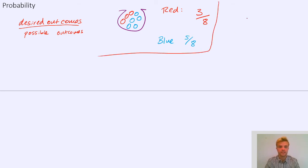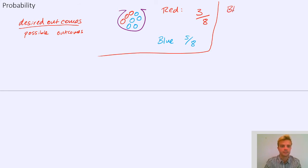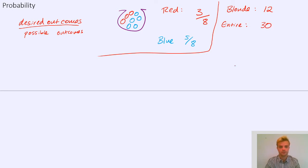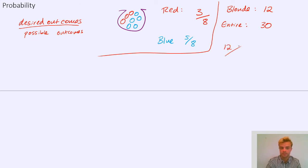Let's say it's not balls in a bag — let's say it's students in a group of people. There are, let's say, 12 blonde students and the entire class is going to be 30 students. So what's the probability that I pick someone who's blonde? Well, the desired outcomes: there are 12. And how many possible outcomes — how many possible people are there to choose from? There are 30. So it's just 12 out of 30.